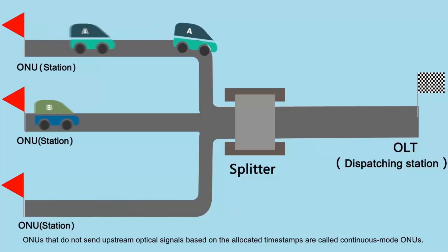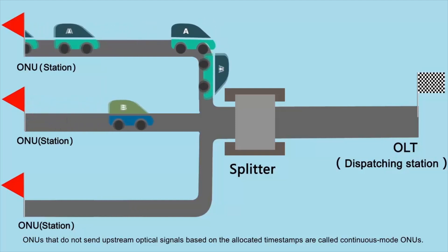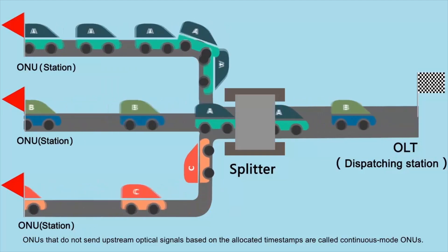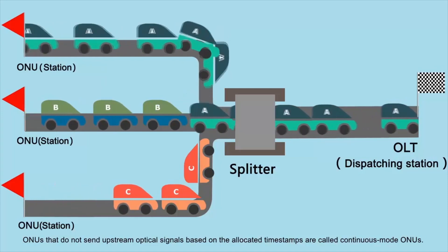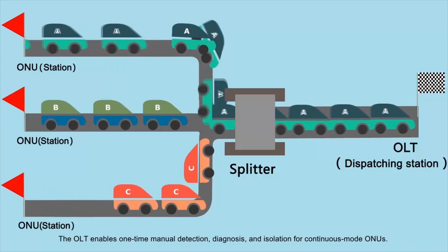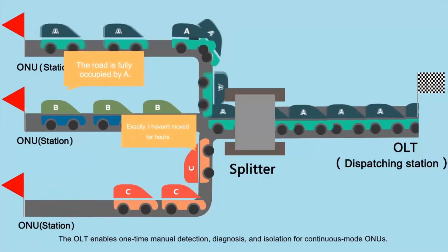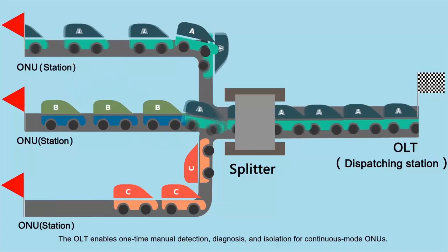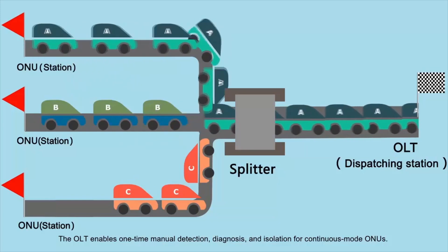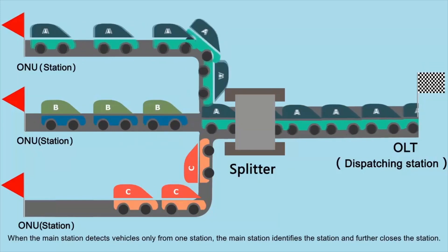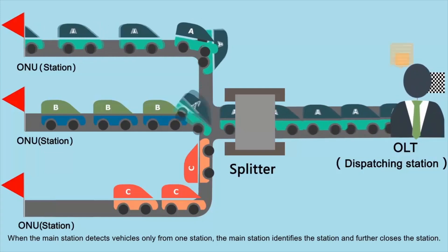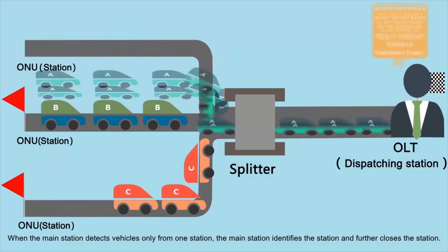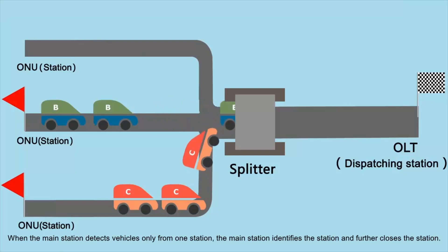Continuous Mode ONU Detection: ONUs that do not send upstream optical signals based on the allocated time stamps are called Continuous Mode ONUs. The OLT enables one-time manual detection, diagnosis, and isolation for Continuous Mode ONUs. When the main station detects vehicles only from one station, the main station identifies the station and further closes it.